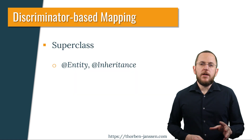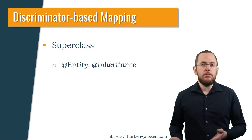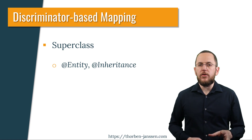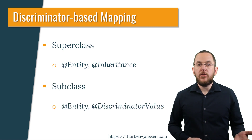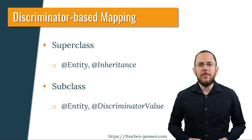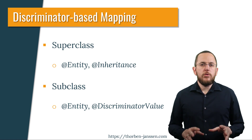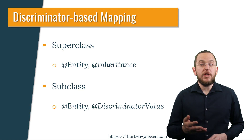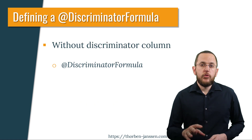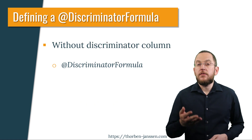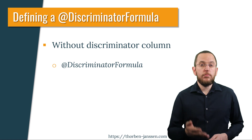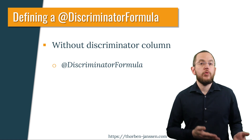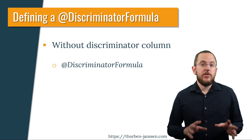If we add a discriminator column, the mapping using inheritance type SingleTable would be straightforward. You annotate your superclass with @Entity and @Inheritance. Your subclasses extend the superclass and you annotate them with @Entity. If you don't want to use the simple class name as the discriminator value, you can define it using a @DiscriminatorValue annotation. Without a discriminator column, you need to add a @DiscriminatorFormula annotation to the superclass and provide an SQL snippet that returns the discriminator value of a record. Everything else stays the same.